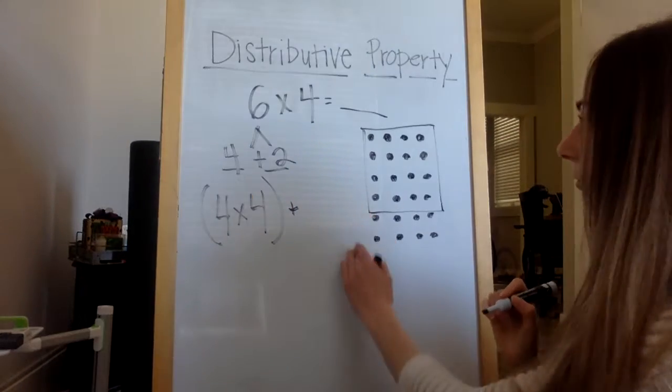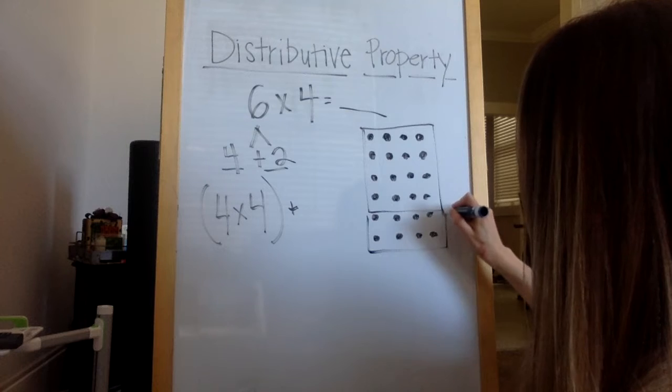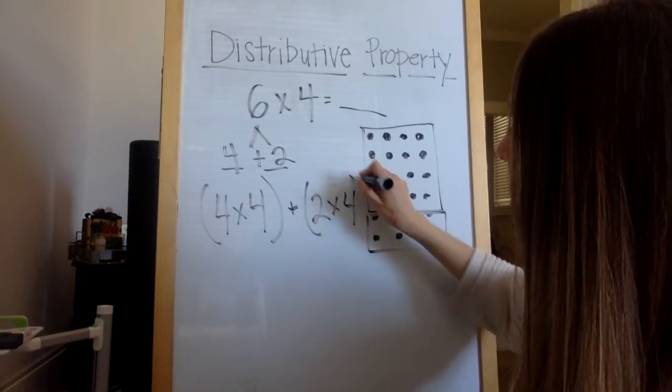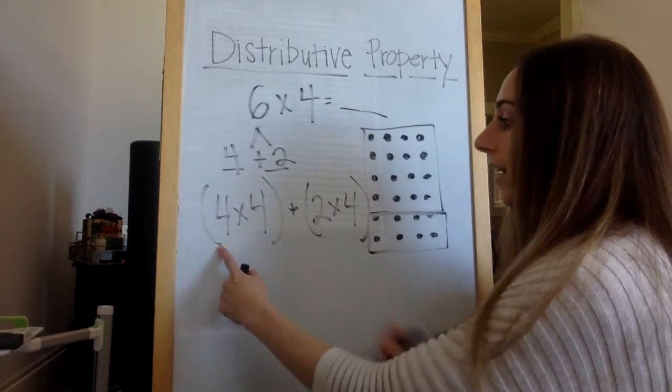Plus, oh my goodness, what's my other addend? Two. Two rows of four. Okay, I took my two addends. I took the four and the two.